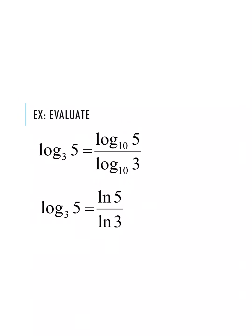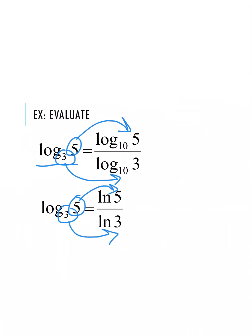We have one expression — log base 3 of 5 — and we'll evaluate it using both log and natural log. The 5 is the value we're evaluating, so it goes to the numerator as log base 10 of 5; the base 3 goes to the denominator as log base 10 of 3. Using natural log: natural log of 5 divided by natural log of 3. Both should give the same answer when you plug them into your calculator.